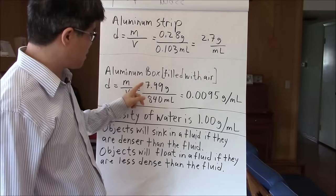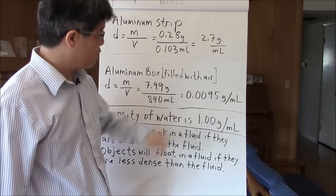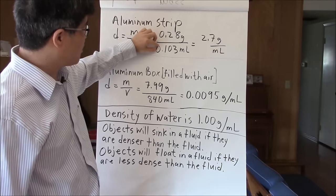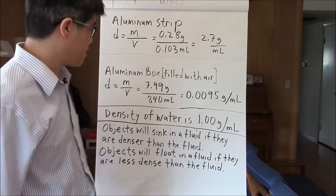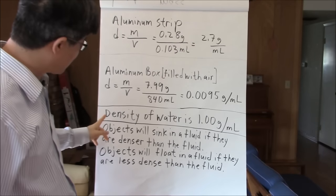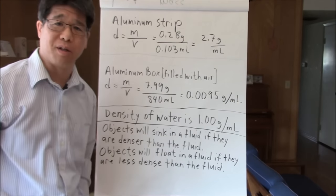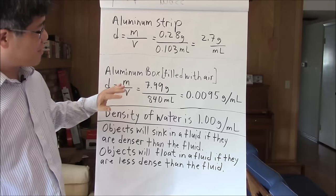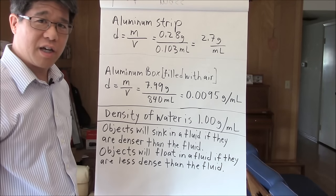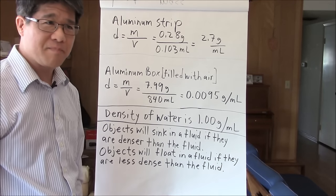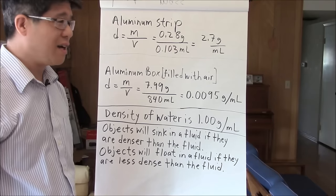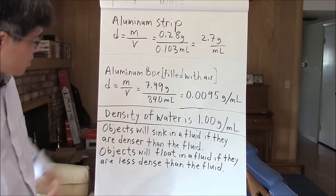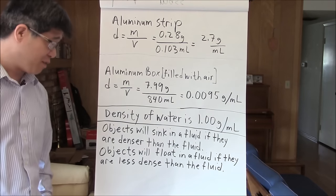If something has a large volume relative to its mass it will be low density, and higher mass compared to volume means higher density. The density of water is 1 gram per milliliter, which is handy to know: if an object has a greater density than water it will sink, and if it has a lesser density than water it will float. Objects sink in a fluid if they are denser than the fluid.